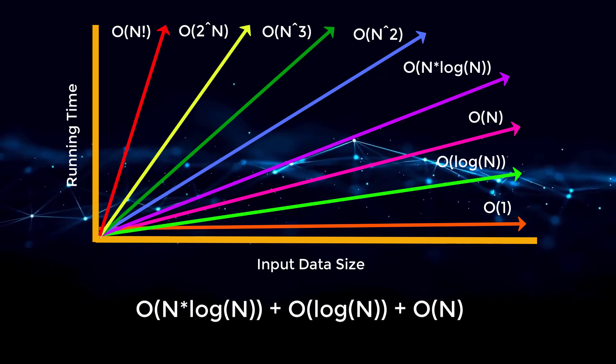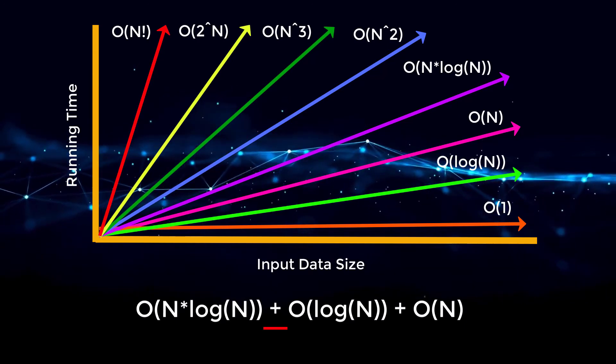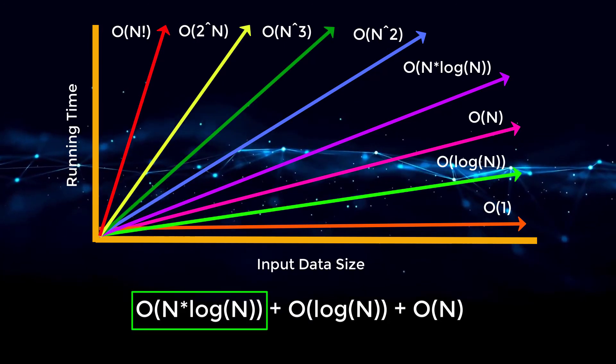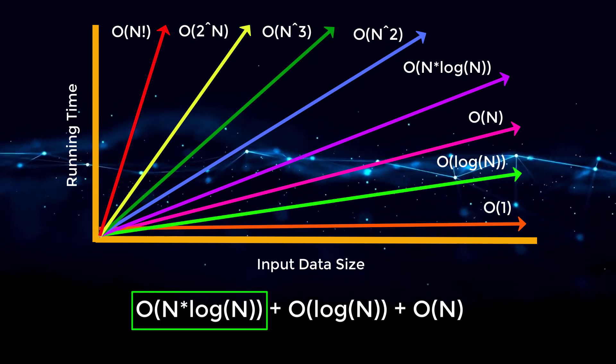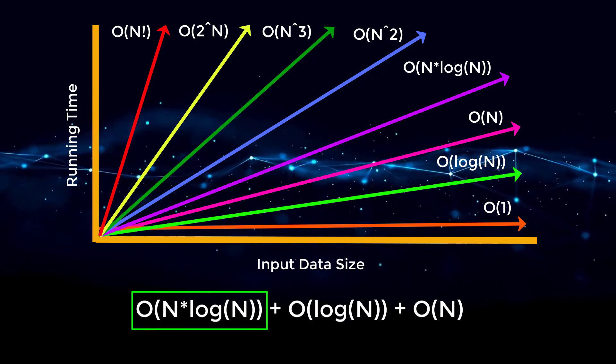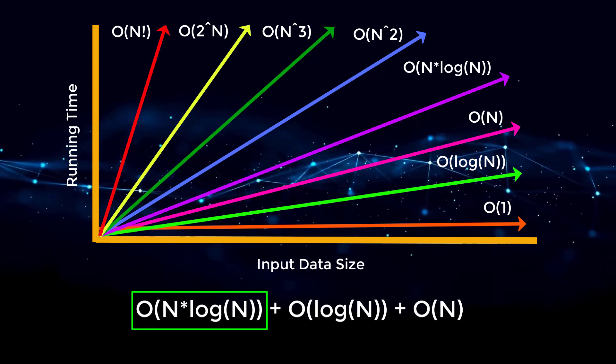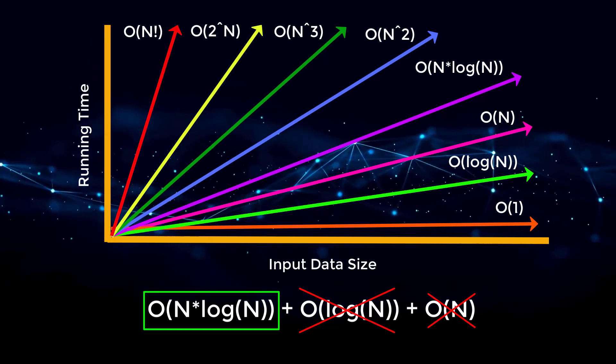Another example would be if we had an algorithm that ran in Big O of n times log of n plus log of n plus Big O of n. When we multiply terms together, you can always view them as binded as the same term. So as our input grows, the Big O of n times log of n term will overwhelmingly dominate the other terms. So we can drop Big O of n and log of n.